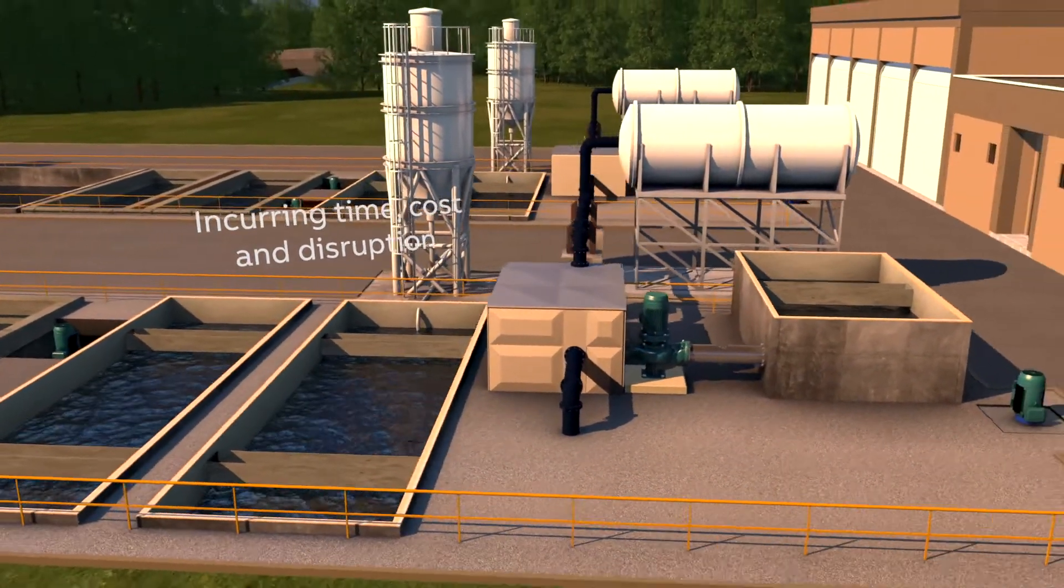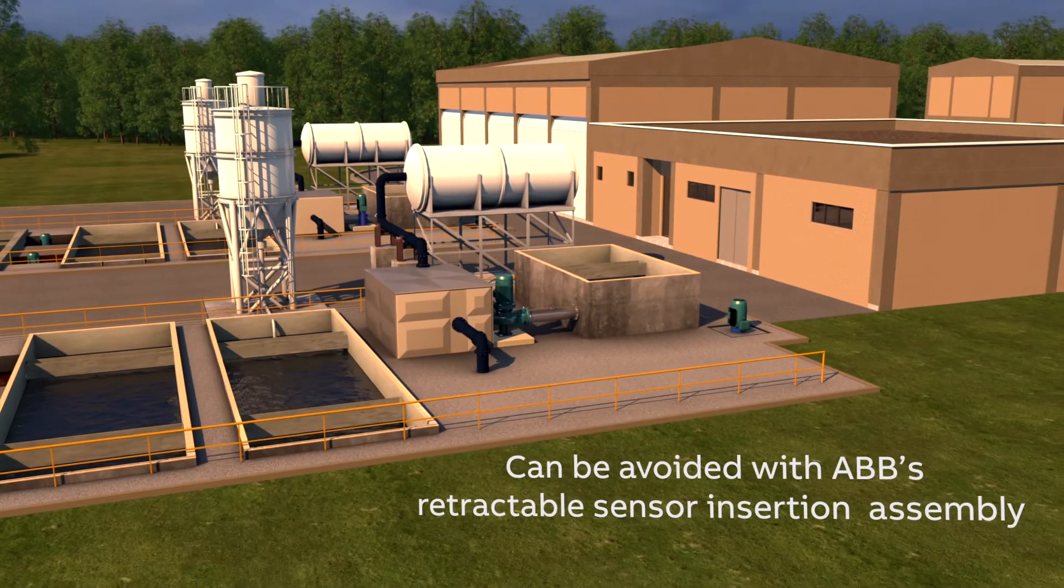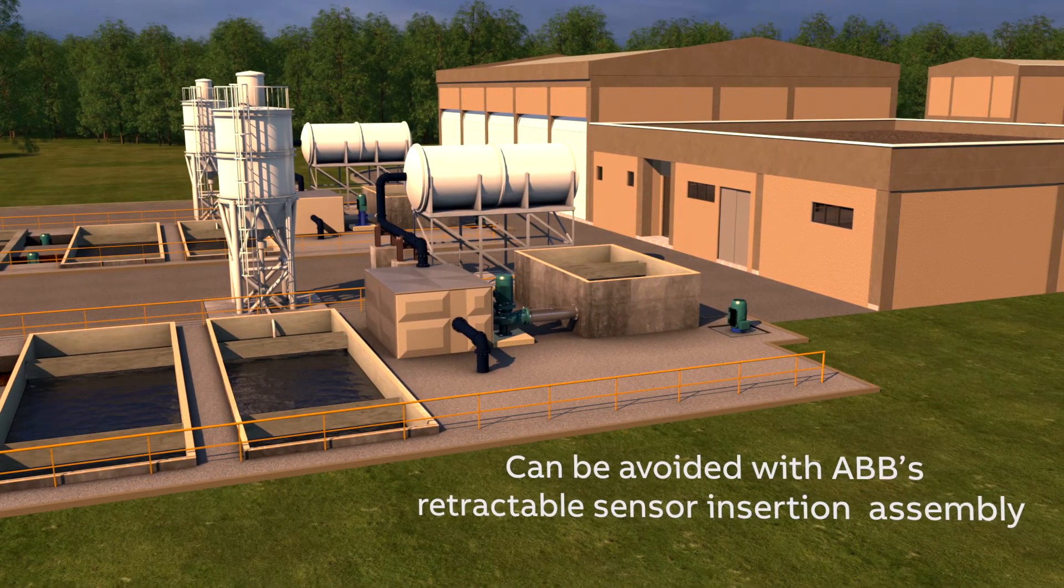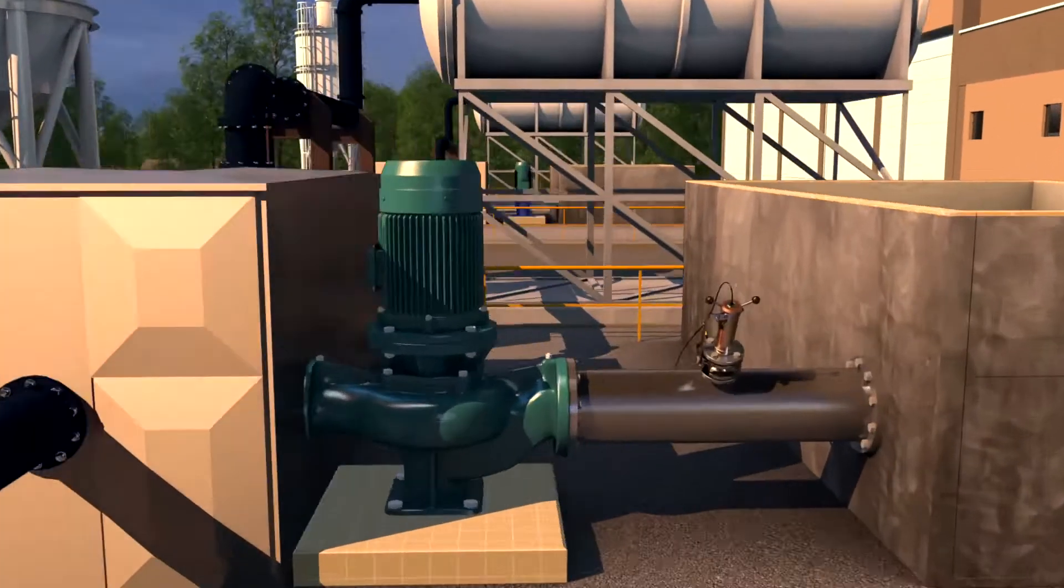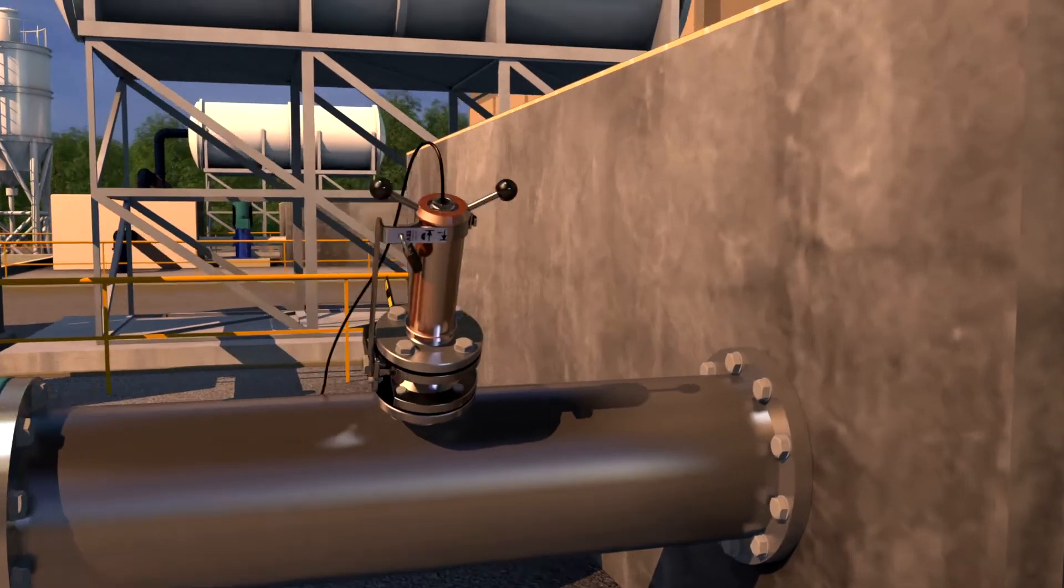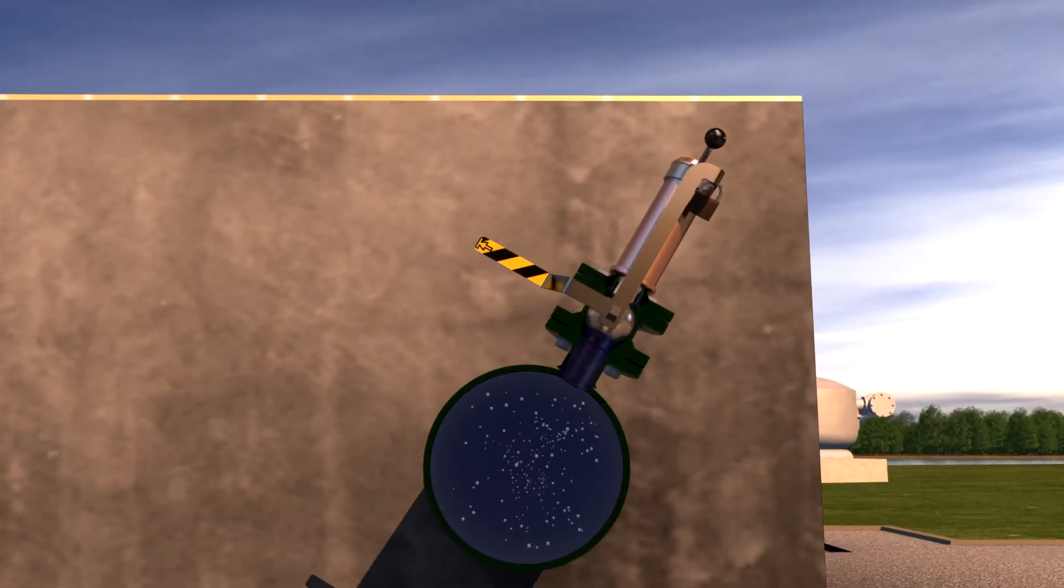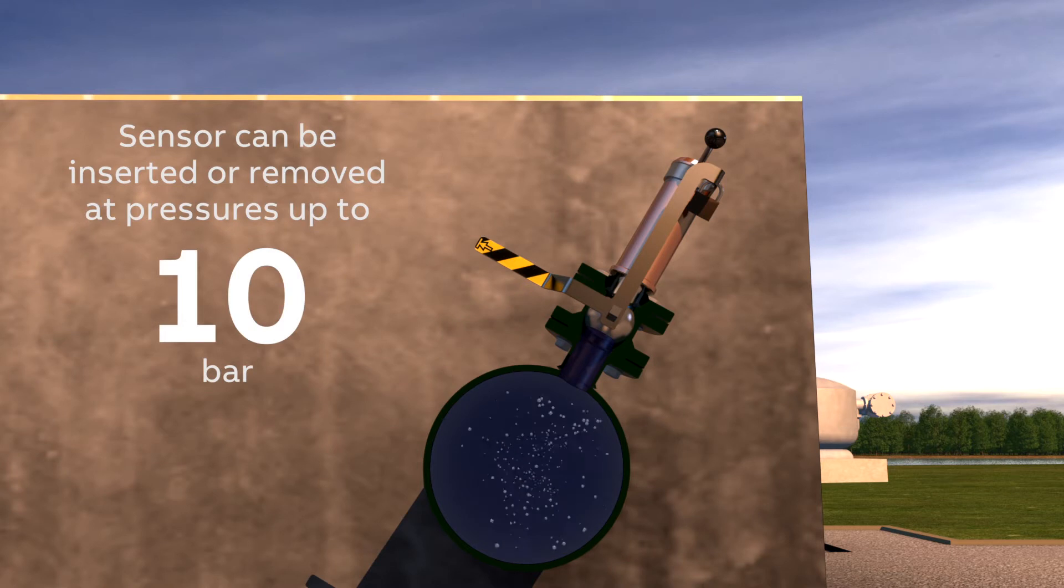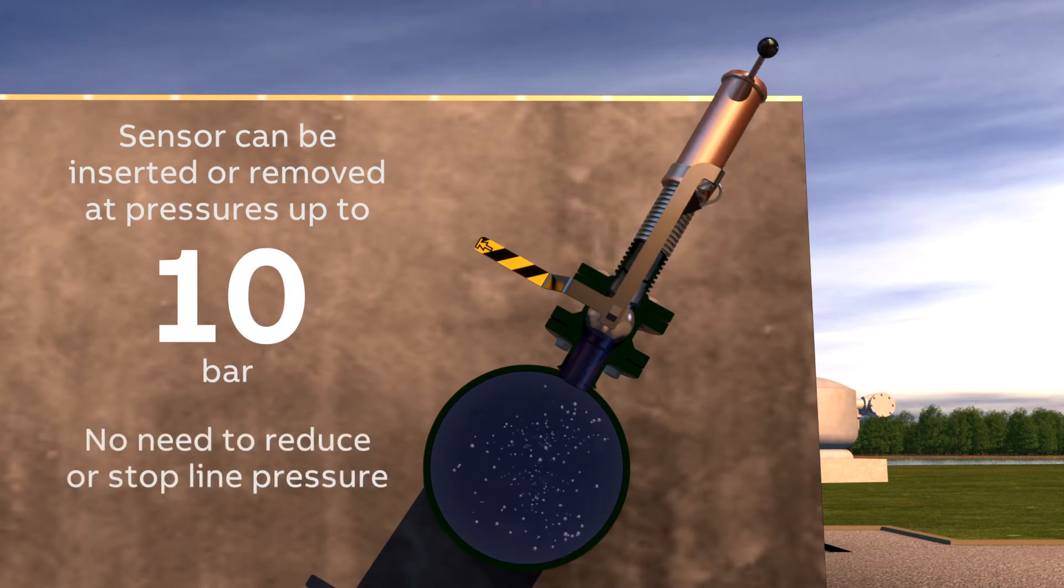This can now be avoided by using ABB's retractable sensor insertion assembly. Once bolted to the pipe flange to create a secure connection, the assembly enables the sensor to be inserted or removed at pressures up to 10 bar with no need to reduce or stop line pressure.